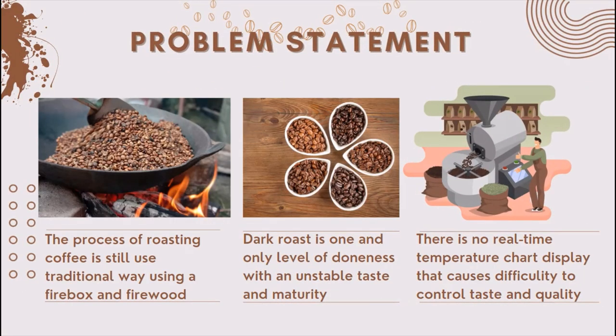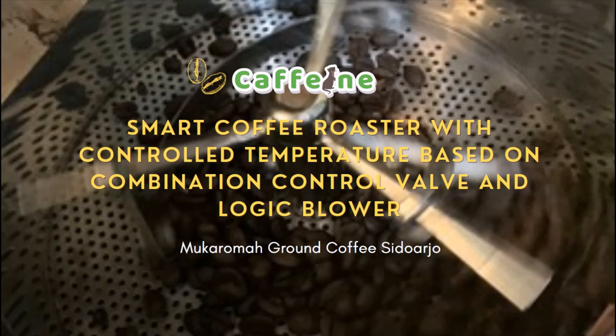There are several problems faced by the coffee production industry. One of them is experienced by the Mukaroma ground coffee industry. First, the process of roasting coffee still uses a traditional way, using a firebox and firewood. Second, dark roast is the one and only level of darkness, with an unstable taste and maturity. Third, there is no real-time temperature display, which causes difficulty in controlling taste and quality.